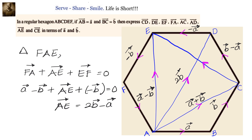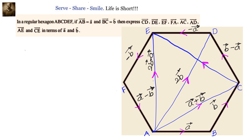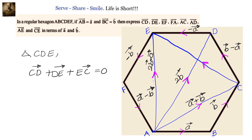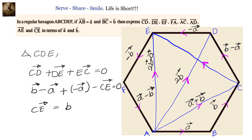The only vector left is CE vector. We can find it using triangle CDE, since CD vector and DE vector are already known. In triangle CDE: CD vector plus DE vector plus EC vector equals 0, so CD vector plus DE vector equals CE vector. CD vector is B vector minus A vector, and DE vector is minus A vector. Therefore CE vector equals B vector minus 2A vector. That is how we can represent all the vectors in terms of A vector and B vector.